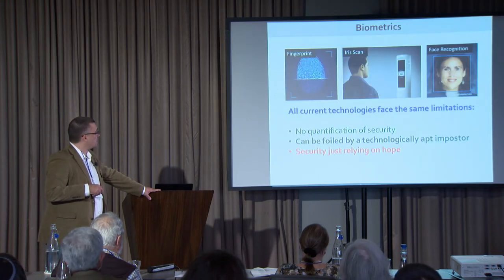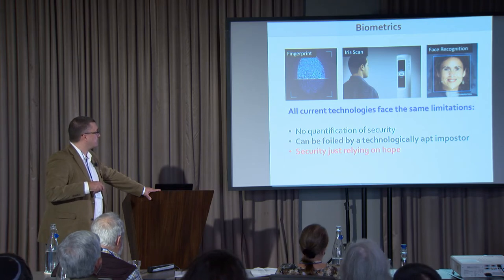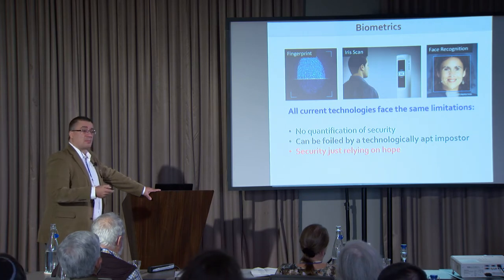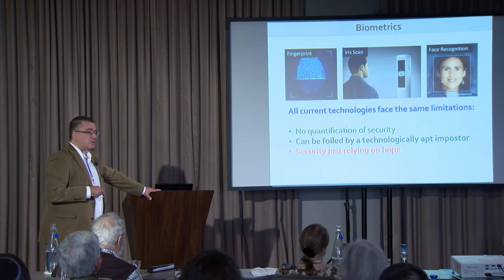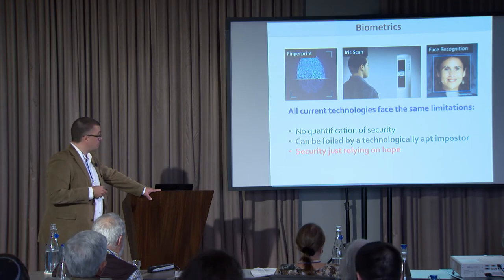You know that there are various technologies currently used for identifying people — most advanced is iris scan and perhaps face recognition. The problem with all those technologies is that they don't quantify security; there is no number, and they can be defeated by someone who has the time and money to do so. Their security is just relying on hope.